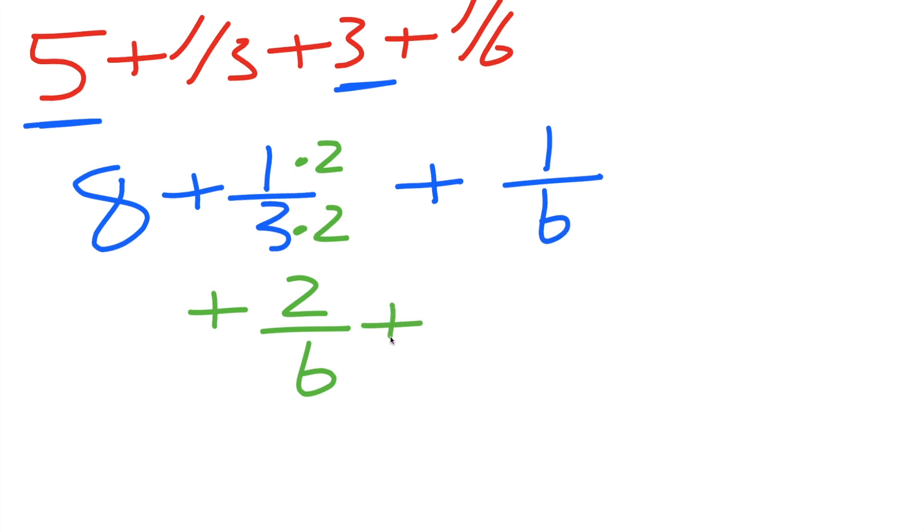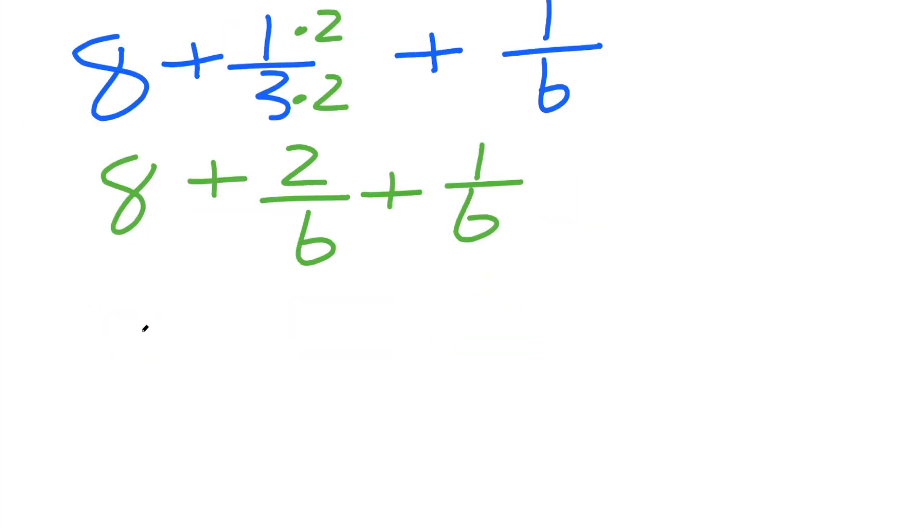So we'll just bring everything down. So 1 divided by 6. And we'll also bring down our 8. So our 8 will stay plus, now we can add the numerator. 2 plus 1, we get 3 divided by 6. And so you could write this as 8 and 3/6.